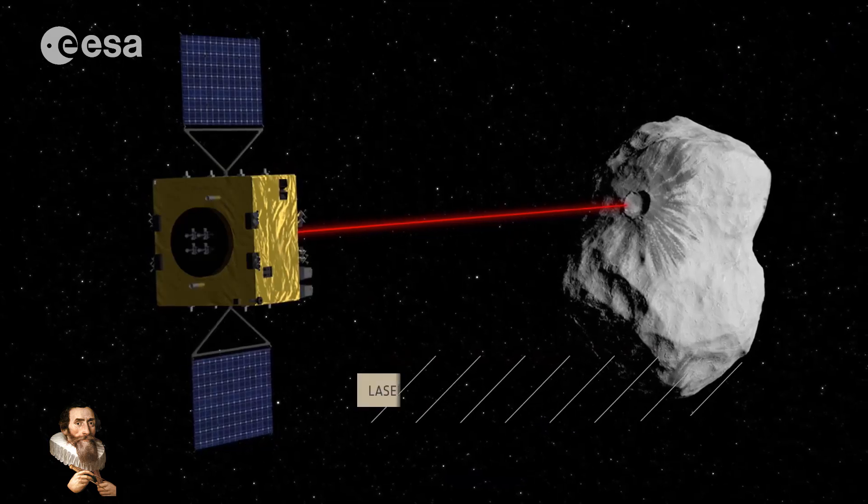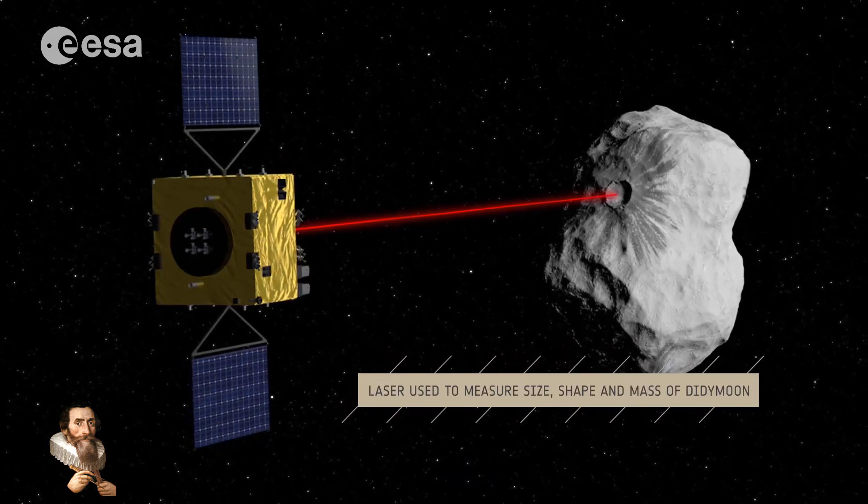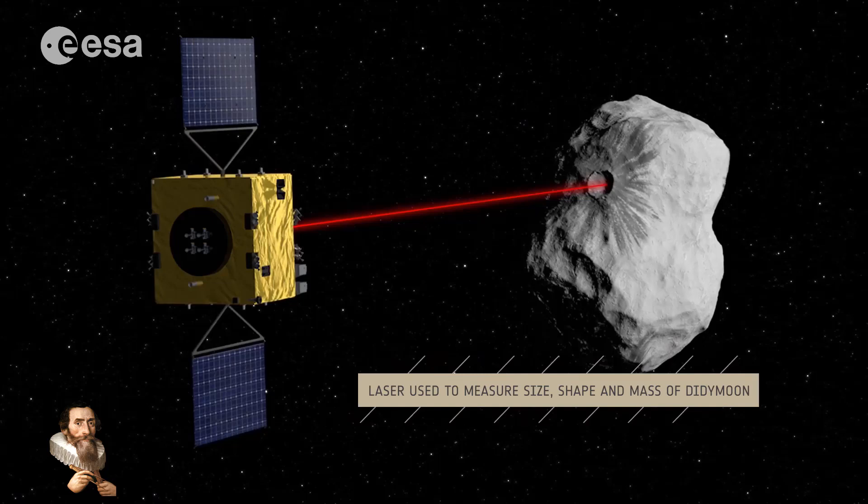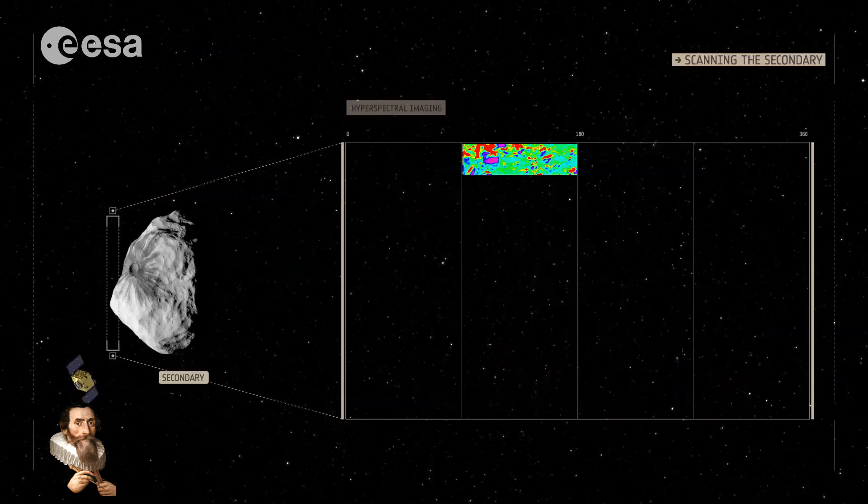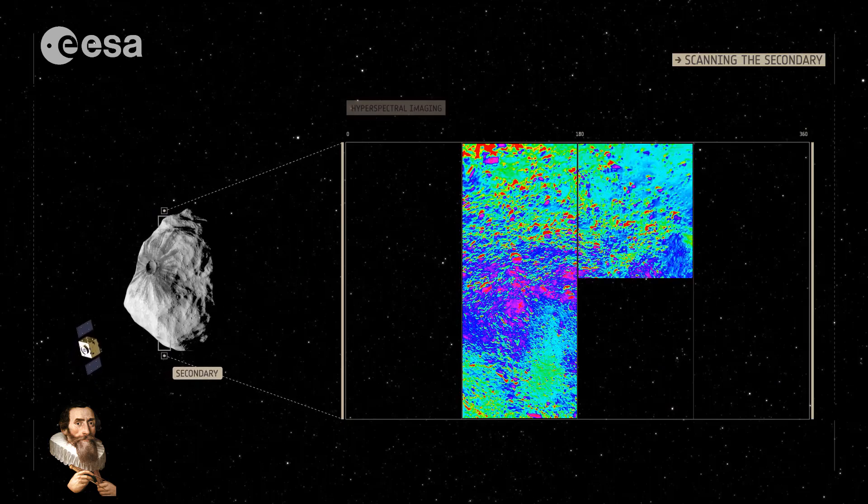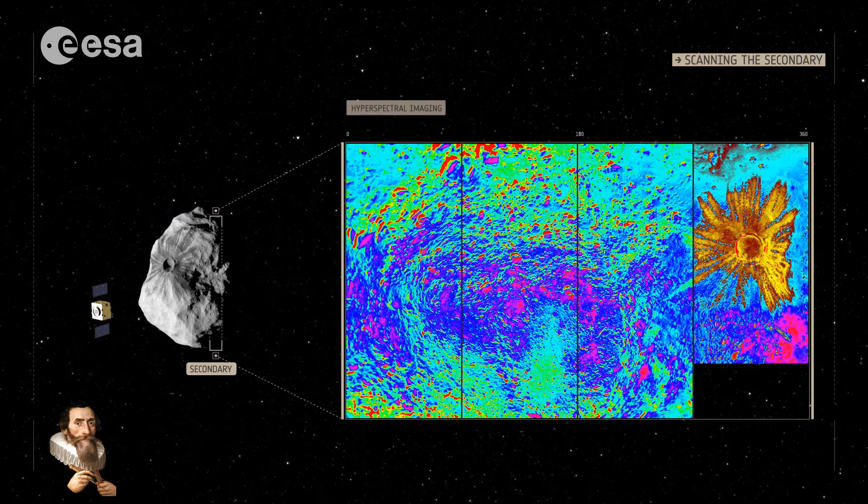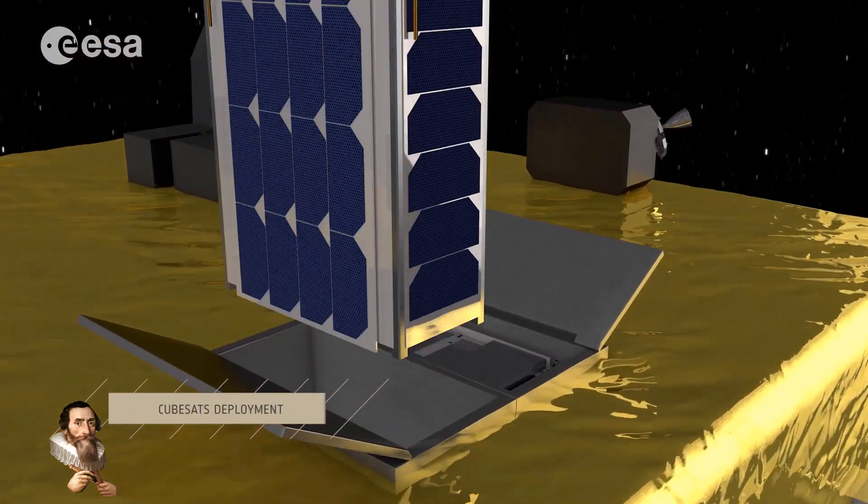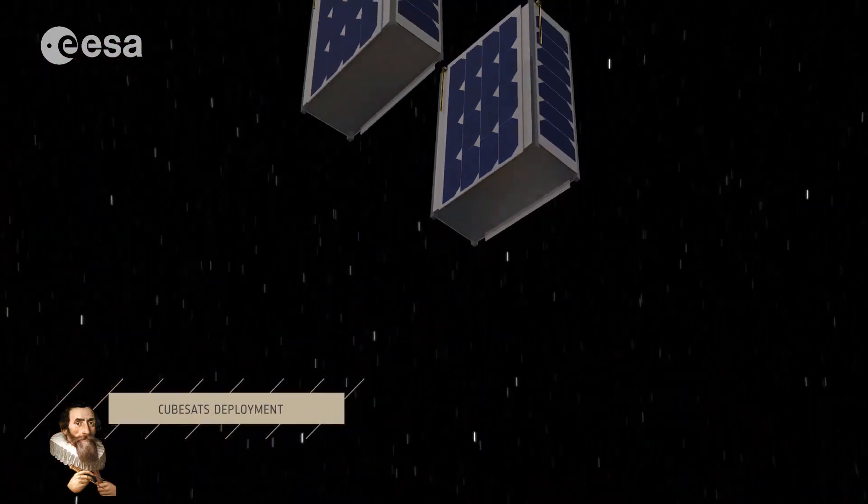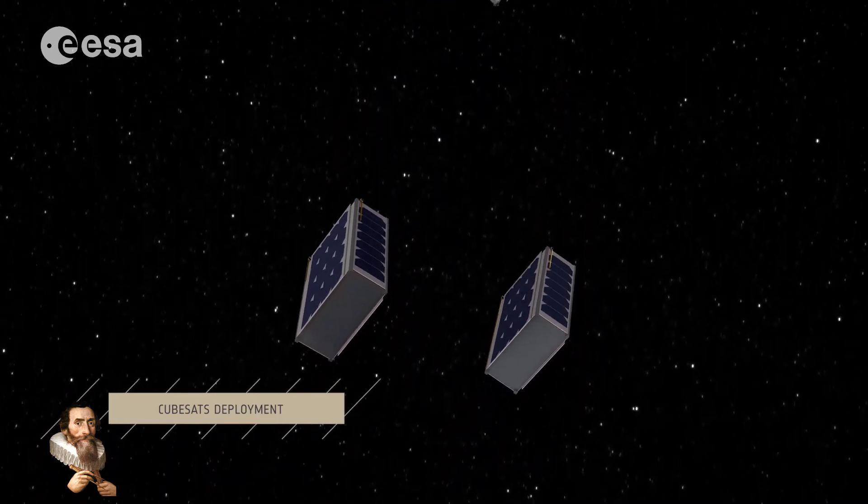HERA is set to demonstrate advanced technologies such as autonomous navigation around an asteroid and low-gravity proximity operations. This mission includes deploying two CubeSats called Milani and Juventus, which will perform close-up observations and gather additional scientific data.